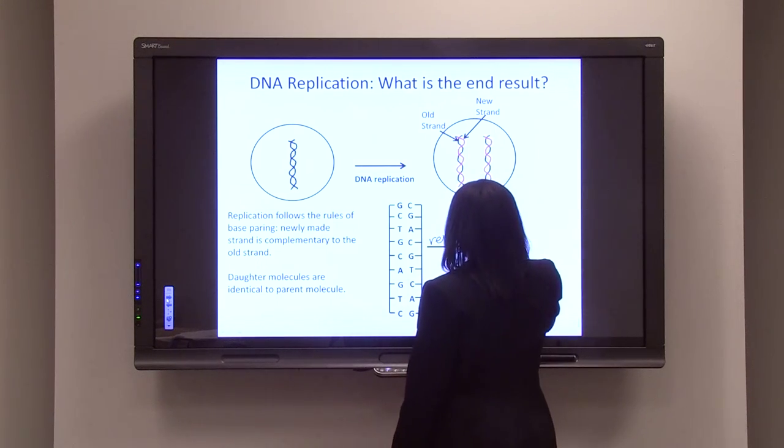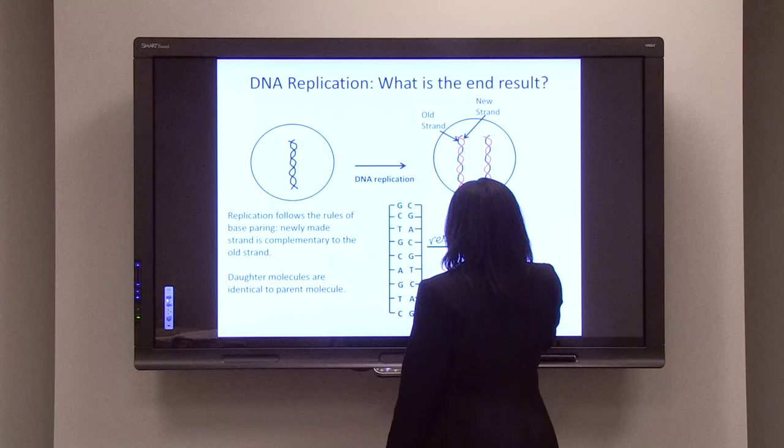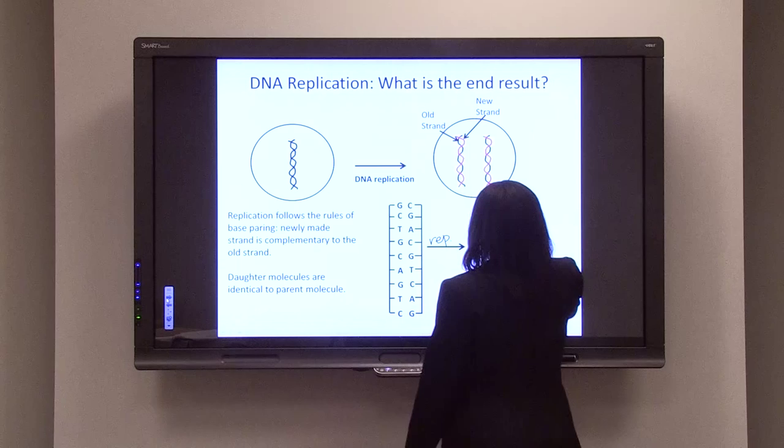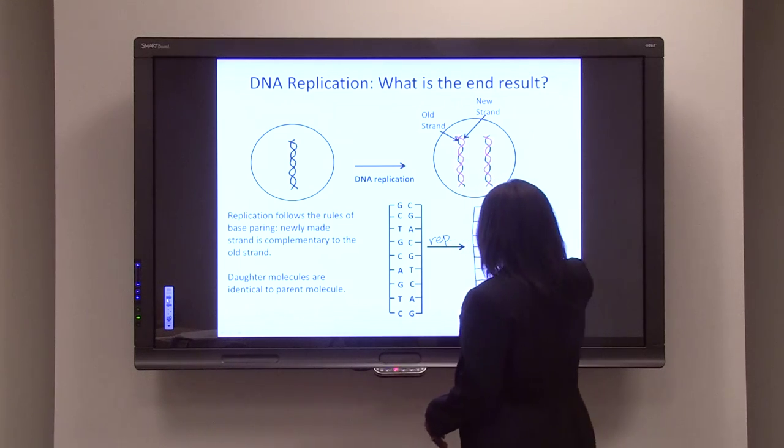So in this case, you have G, C, T, G, C, A, G, T, and C. And this time, when this gets copied, you're going to end up with your daughter molecule. Your daughter molecule will have C, G, A, C, G, T, C, A, and G.